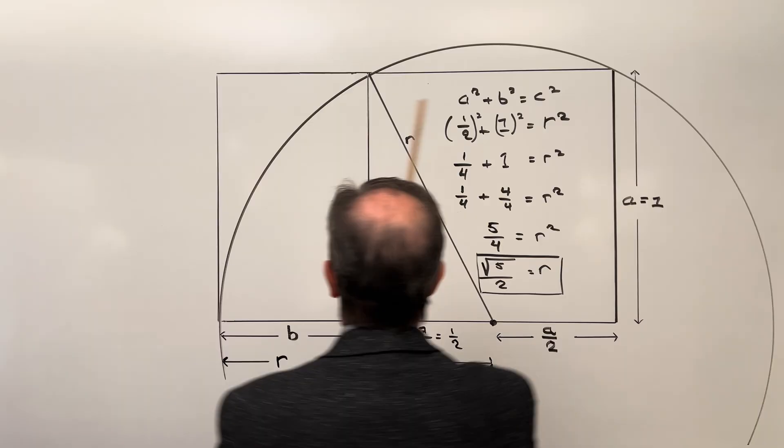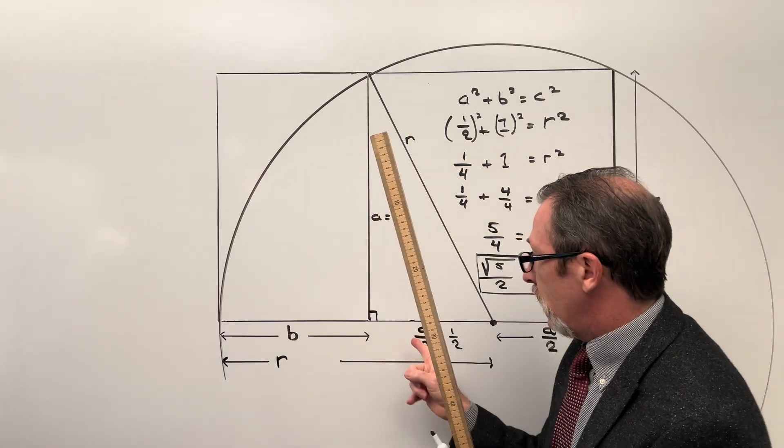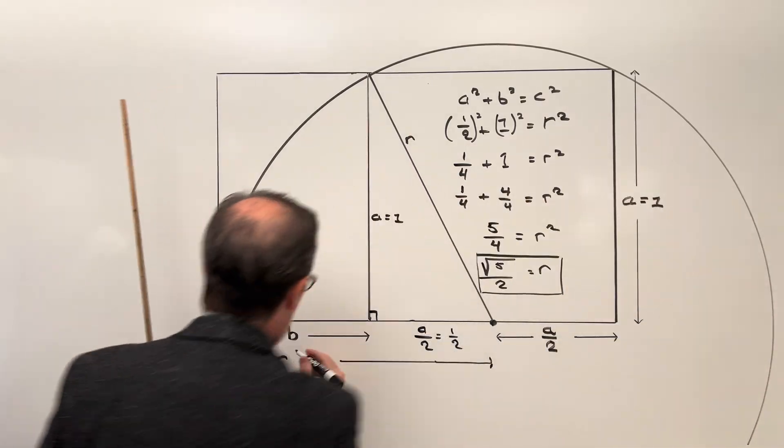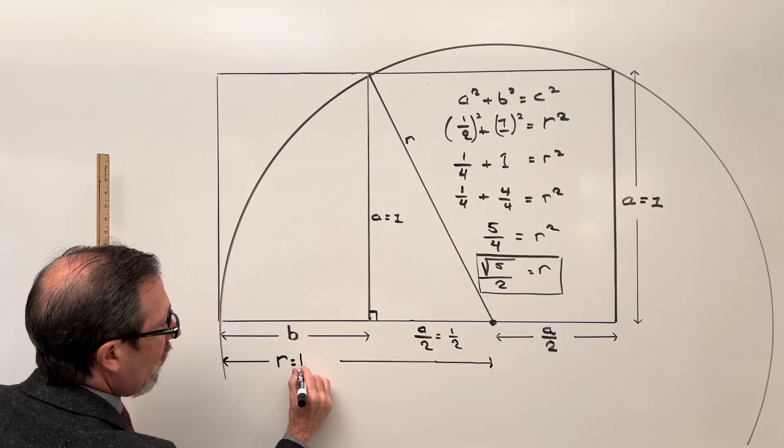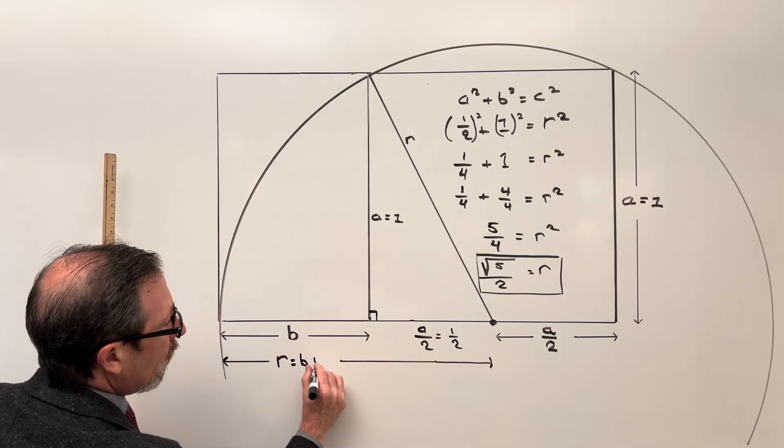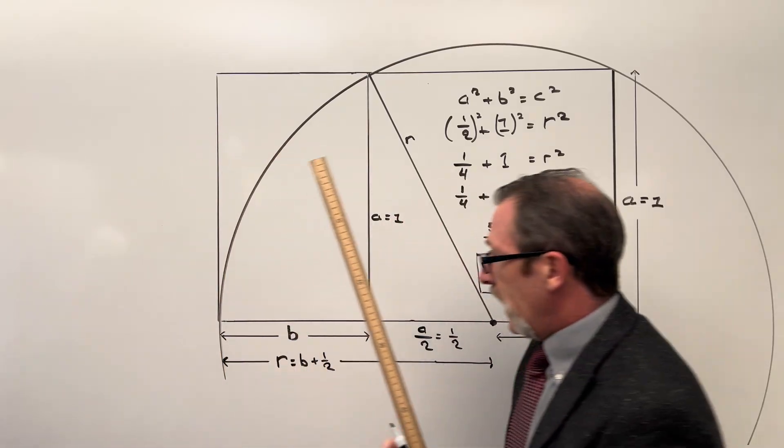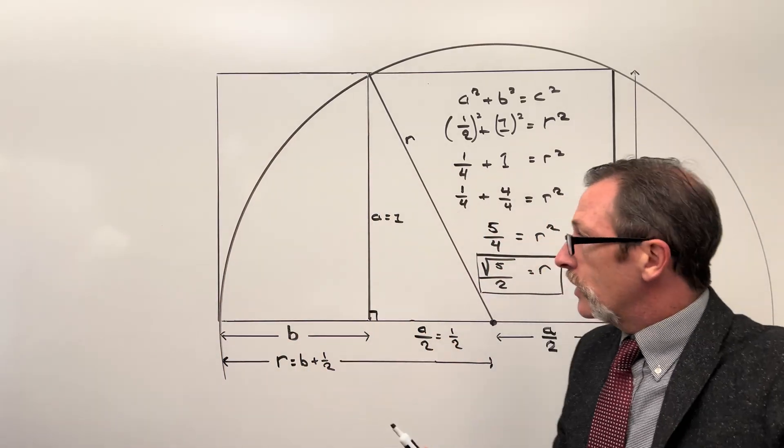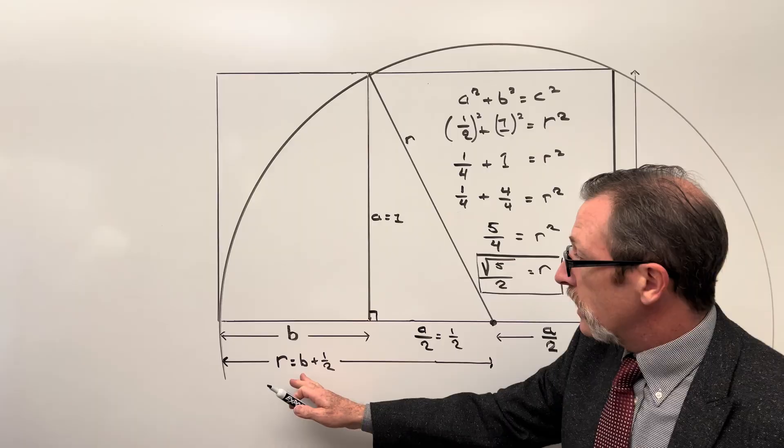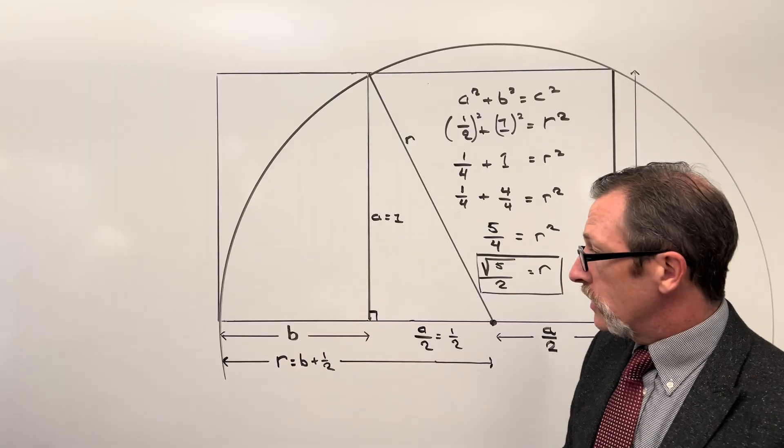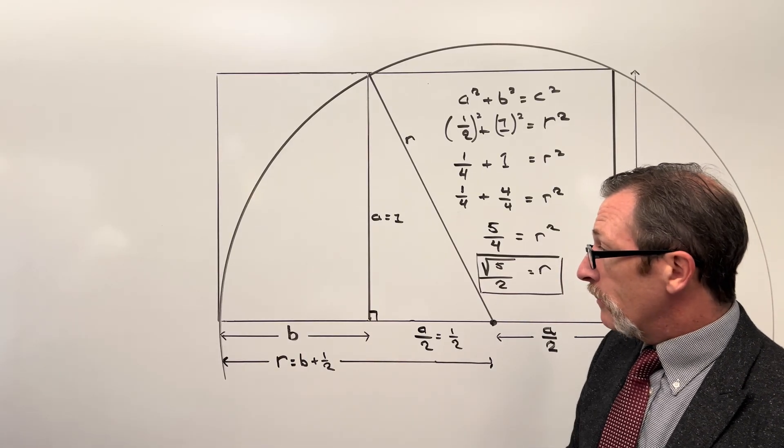And then I can say, what is that radius? Well, it's side B plus this one half. So it is equal to our side B plus our one half. Once they have that, they can start to really work through this because they can say, I can rearrange this using some simple algebra and end up getting B.